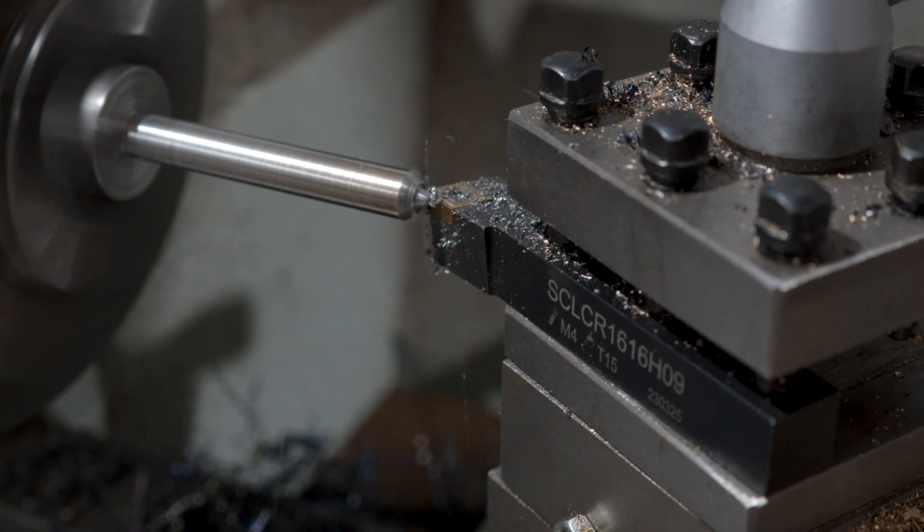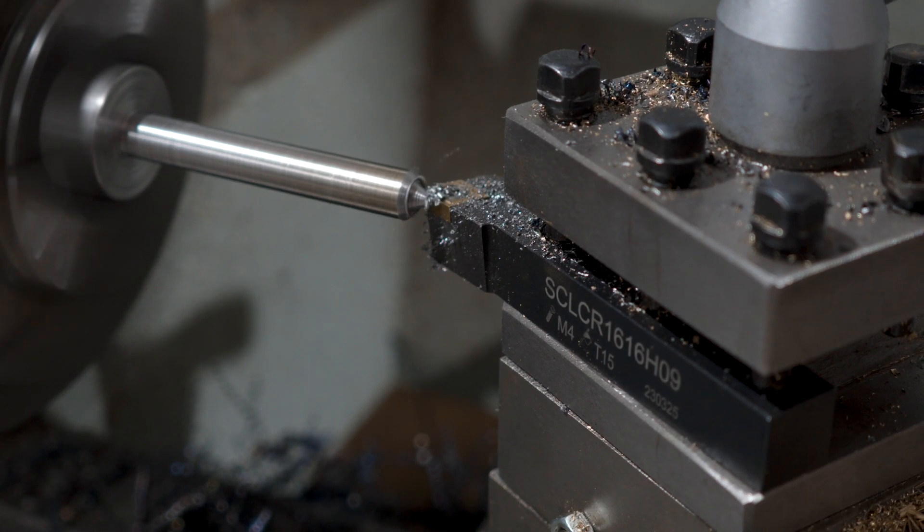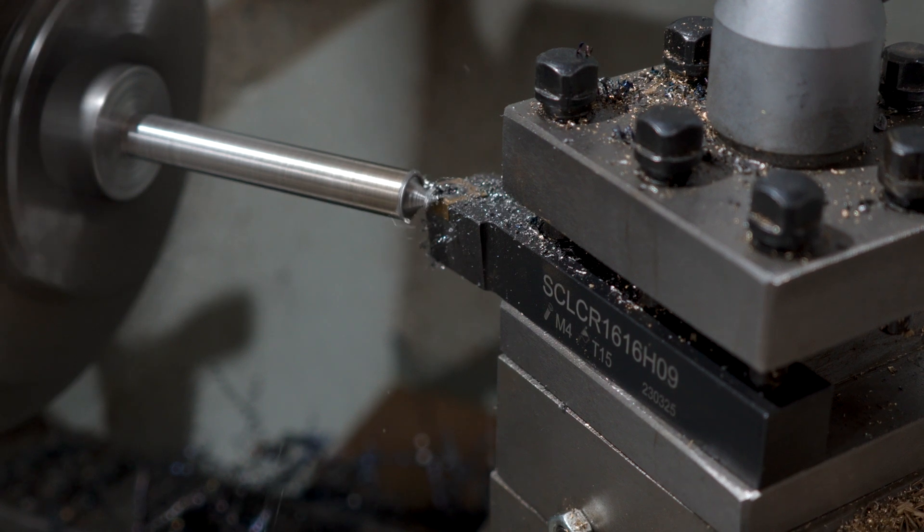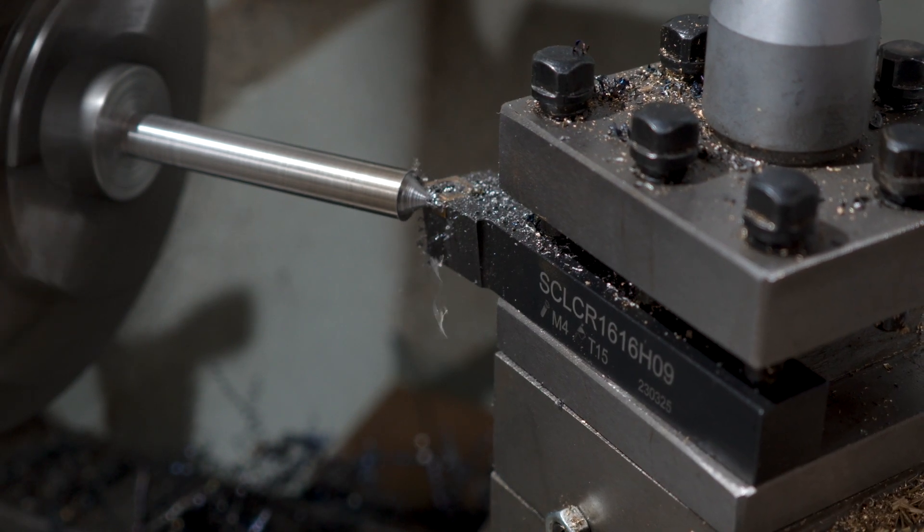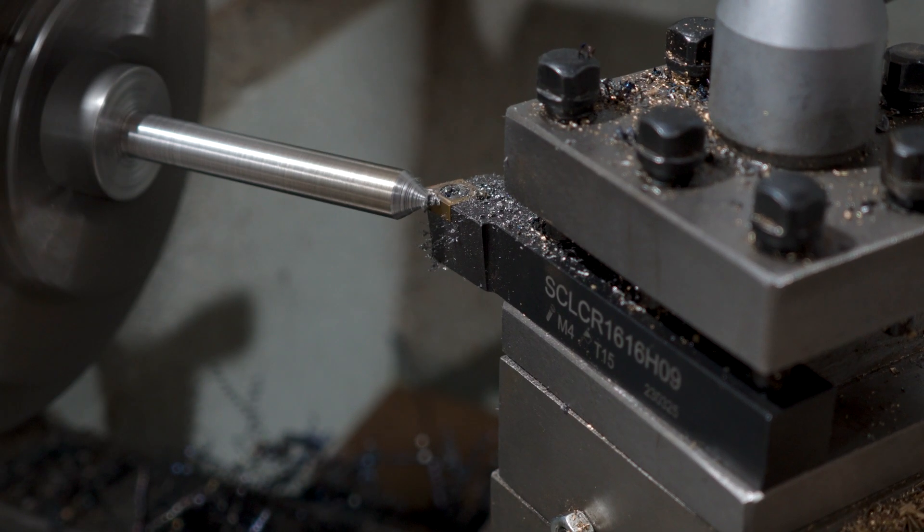Now for the last part, the follower part of the tap follower. I want to harden this part. And the only hardenable steel I have around is some medium carbon 1045. It's probably not ideal, but it's what I have. So it'll have to do. And as you can see, I've already turned most of the diameter into chips. But I guess you've got to do what you've got to do.